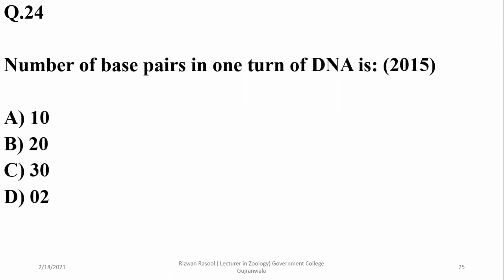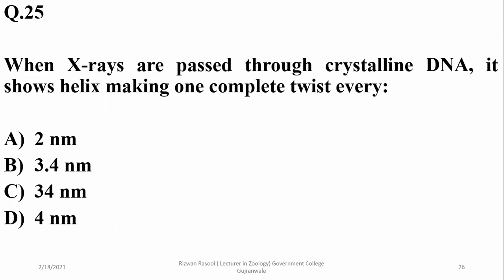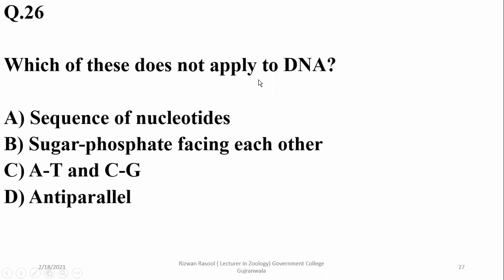The number of base pairs in one turn of DNA is 10, but the number of nucleotides will be 20. When X-rays are passed through crystalline DNA it shows a helix making one complete twist after 3.4 nanometers of distance — so beta. Which of the following does not apply to DNA? Sugar-phosphate facing each other is the wrong statement — they actually form the backbone, and nitrogenous bases face each other.